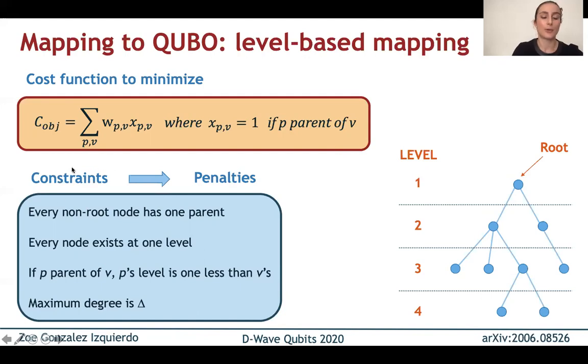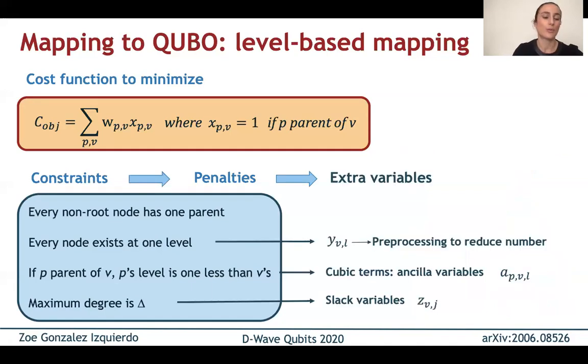So we have a few constraints to ensure that this will be a minimum spanning tree and they are that every non-root node has only one parent, of course the root doesn't have a parent, that every node exists at exactly one level, that if p is the parent of v, then its level is one less than v and also that the maximum degree be delta. Now because this is a QUBO, we can't have constraints, so we will express these as penalties instead.